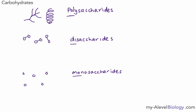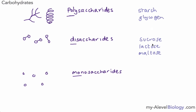For each of these classes, you need to know examples. For polysaccharides, the two common ones are starch and glycogen — starch is found in plants. For disaccharides, the ones to remember are sucrose, lactose, and maltose. For monosaccharides, the most common one is glucose — in fact the one we need to remember is alpha glucose — and we also have fructose and galactose. There are quite a lot of words here to learn, but unfortunately you do have to know them.